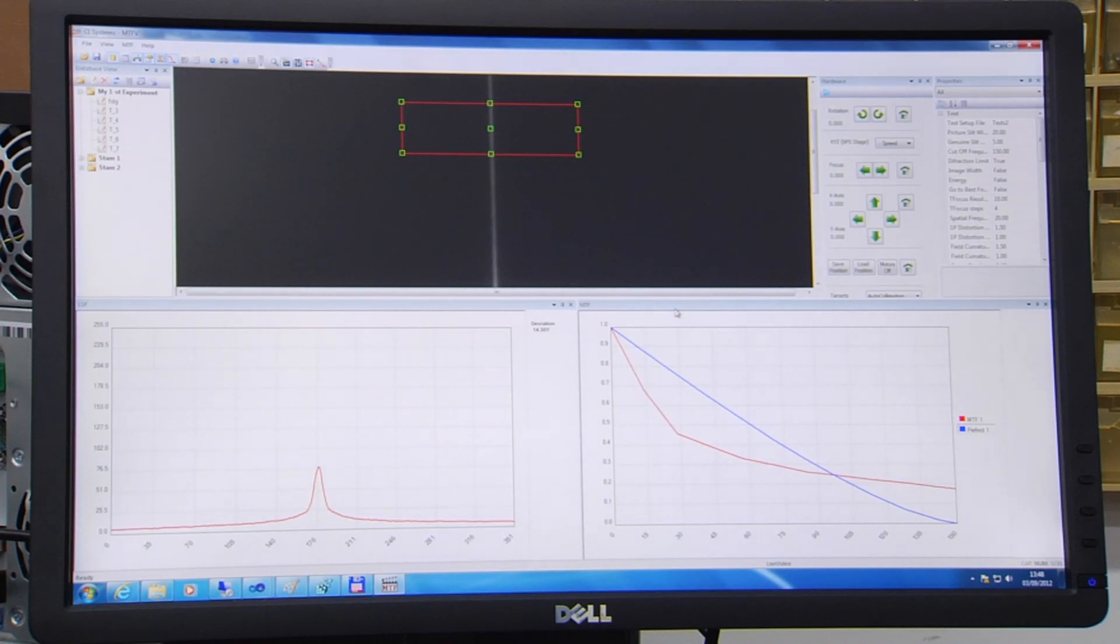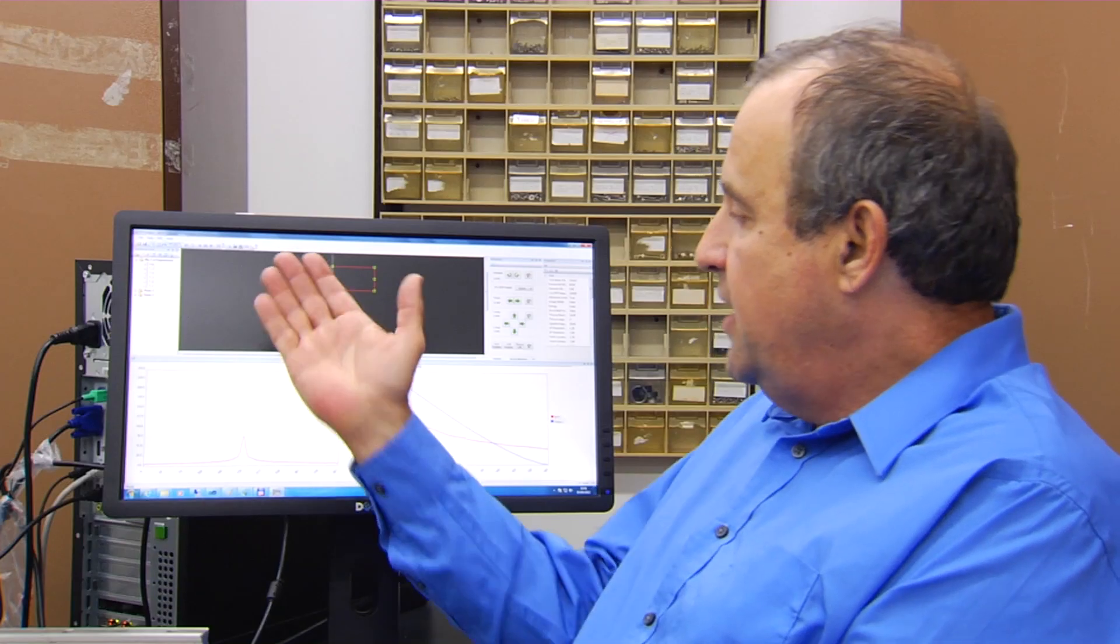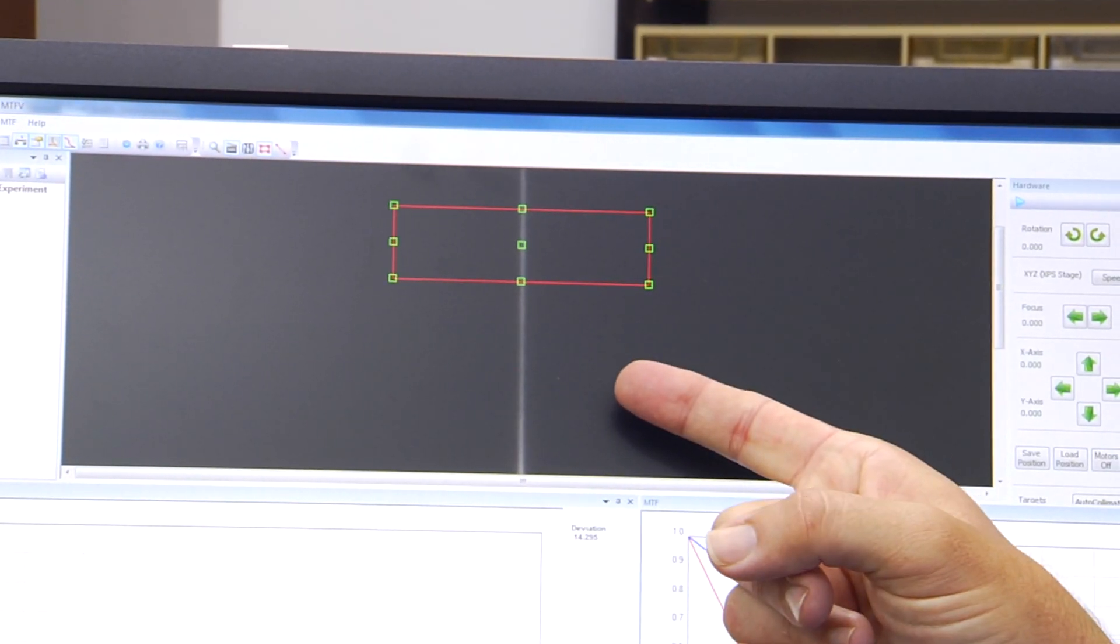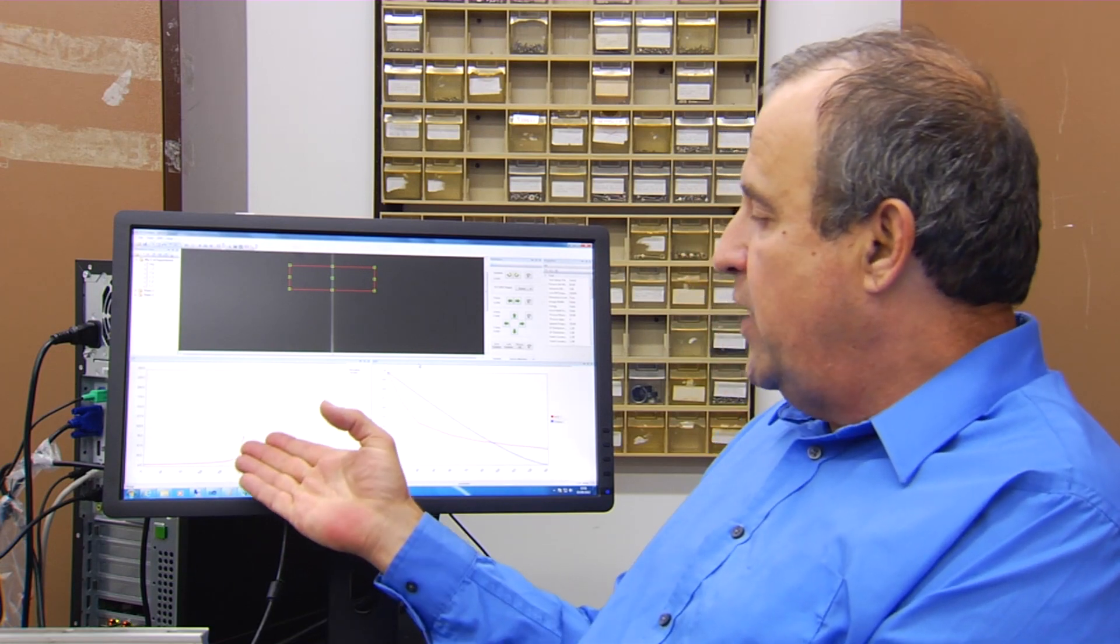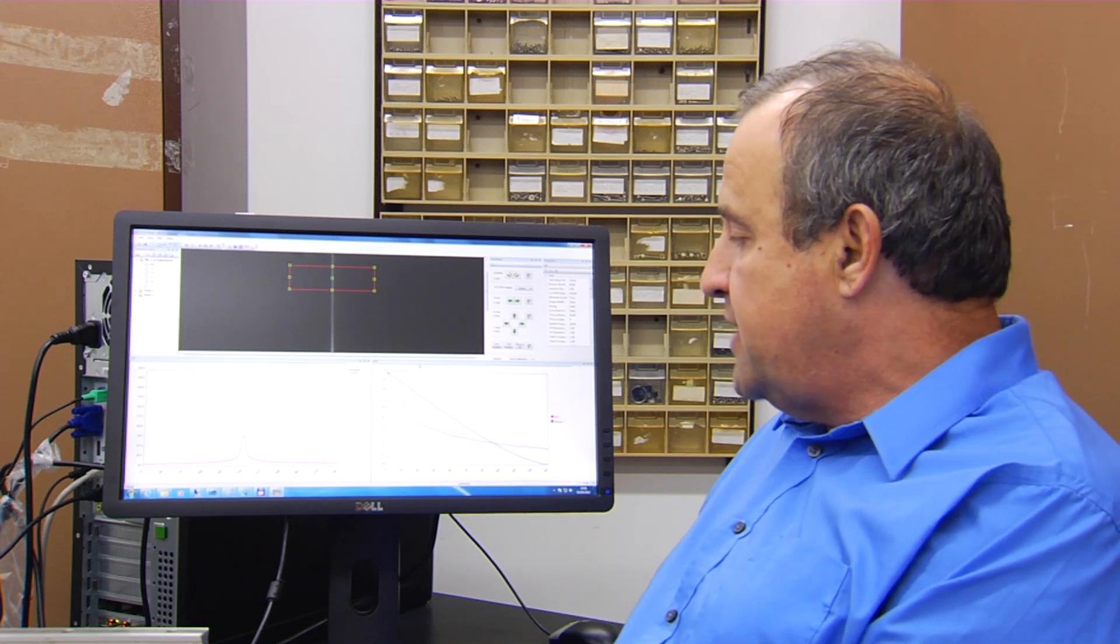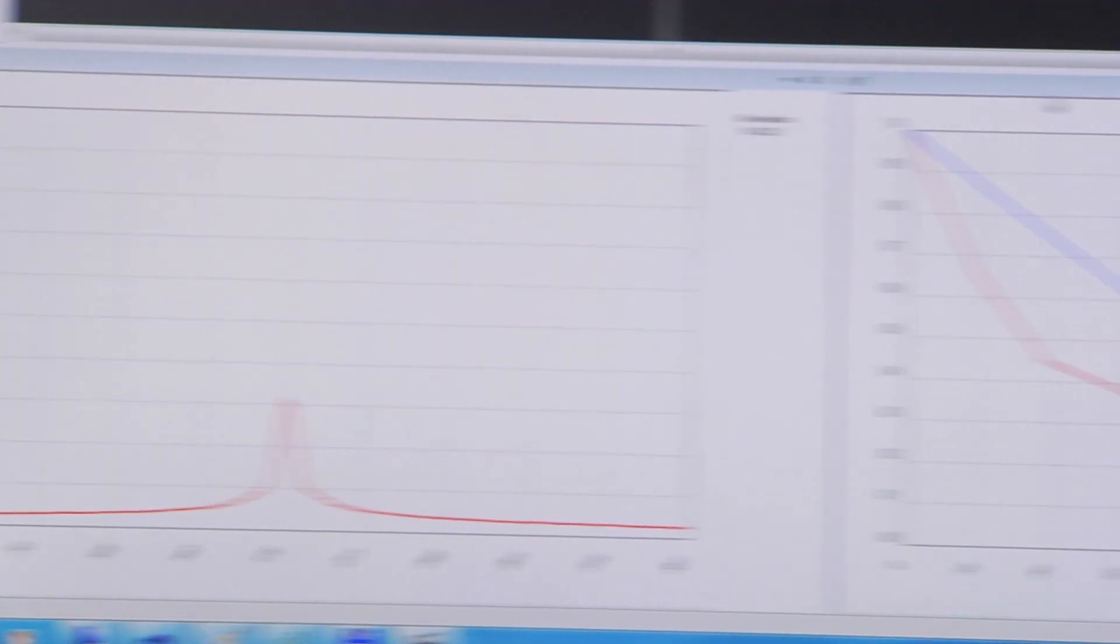For example, we have here a screen performing an MTF test. At the first stage we are choosing the region of interest on a slit or a step for performing MTF test. Afterward, we are obtaining the light spread function from which we are performing the Fourier transform and we are getting the final result of the MTF of the unit under test.